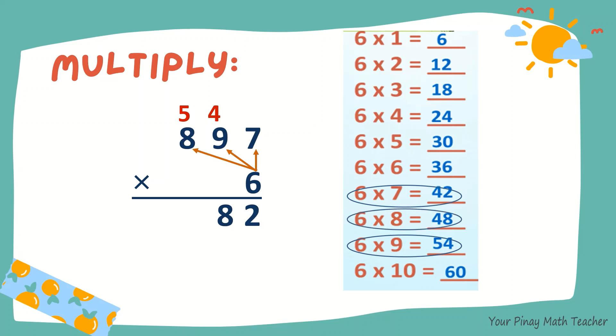6 times 8 is 48. Plus 5, 53. So the product is 5,382.